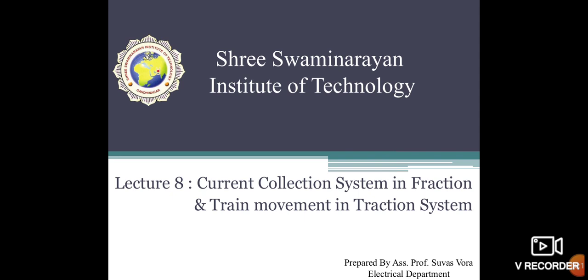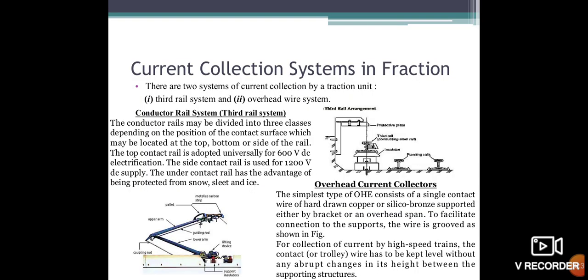Today's topic is the current collector system in traction and train movement in the traction system. The current collector system is used when the locomotive train or electric train needs to collect current. The current collector system in traction has basically two types: the third rail system and the overhead wire system.